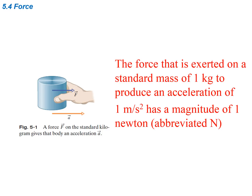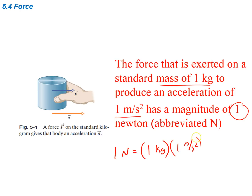Let's talk about the unit for force. A force exerted on a standard mass of one kilogram to produce an acceleration of one meter per second squared is going to have a magnitude of one newton. Therefore, one newton equals one kilogram times one meter per second squared — so a newton is kilogram meters divided by seconds squared.